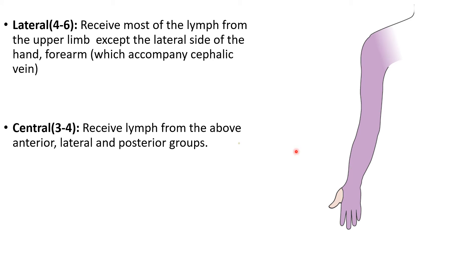The central group, located in the center of the axilla, receives lymph from the other groups of axillary lymph nodes — specifically the anterior, lateral, and posterior groups. From these three groups, lymphatic vessels travel to the central group of lymph nodes.